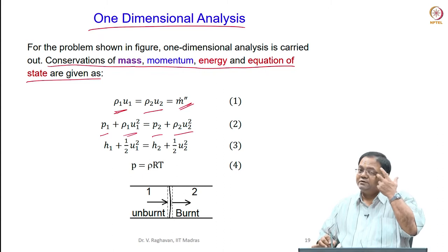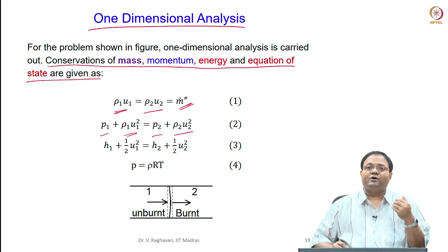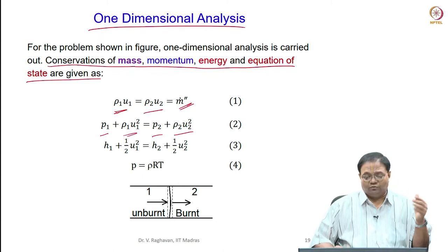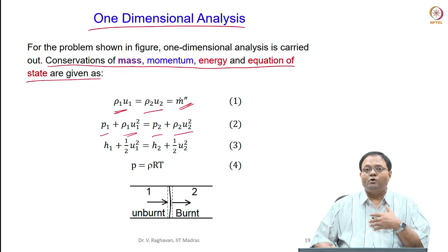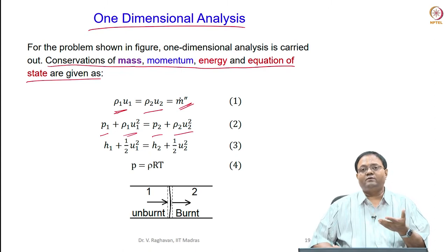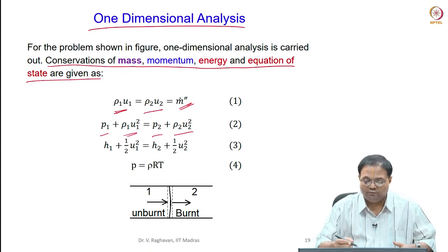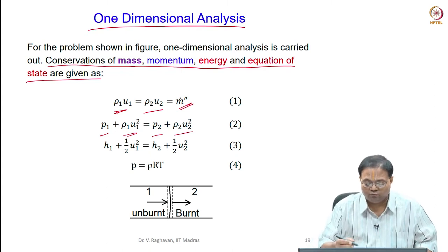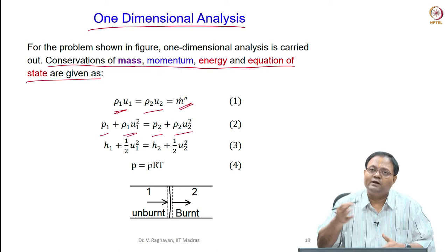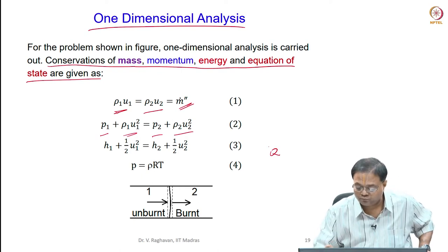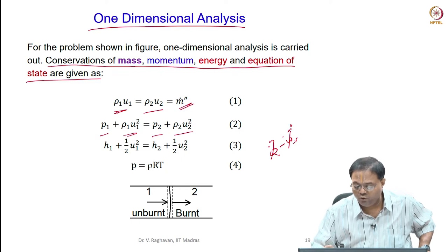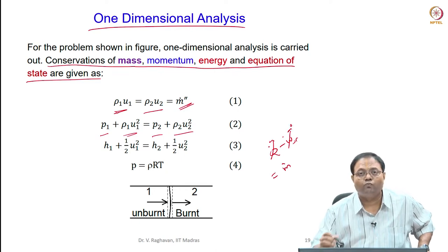The first equation is momentum conservation: P₁ plus ρ₁u₁² (static plus dynamic pressure) equals P₂ plus ρ₂u₂². For energy conservation, we assume steady propagation and no external heat transfer, so Q and W are both zero.